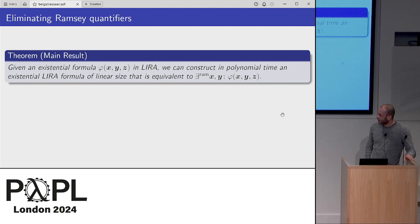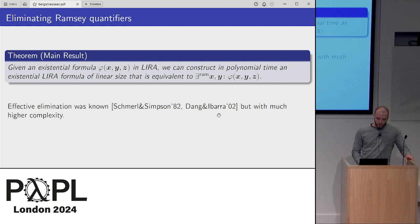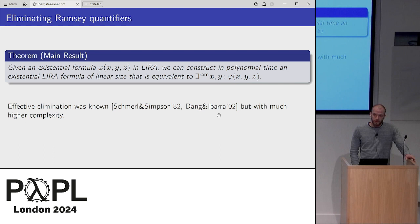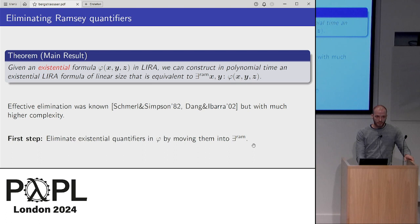Our main result is that if we are given an existential formula in linear integer real arithmetic, then we can construct in polynomial time a formula of linear size that is equivalent to the Ramsey quantified formula. So we can eliminate the Ramsey quantifier in polynomial time and the result is a formula of linear size, though we do get existential quantifiers. This was already known to be effectively eliminable, but with much higher complexity. The previous method assumed the formula to be quantifier-free; we allow an existential formula from the start. Their approach had to eliminate those existential quantifiers, which blows up. We show we don't have to eliminate them but can instead shift them into the Ramsey quantifier, then eliminate it — giving better complexity.